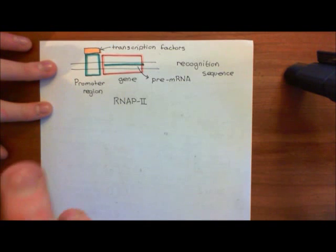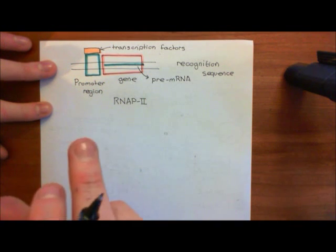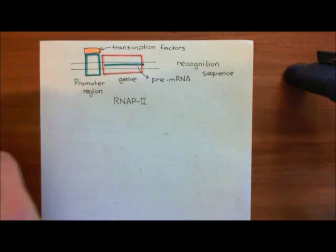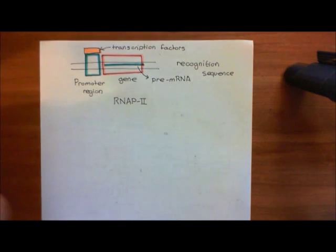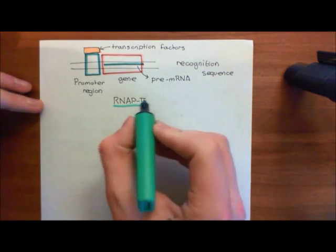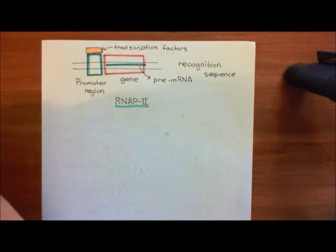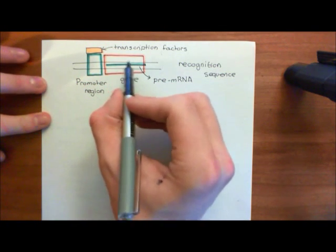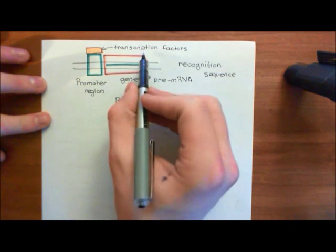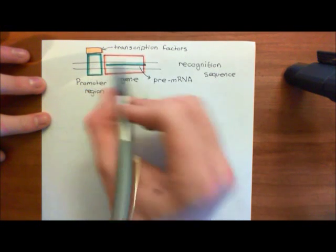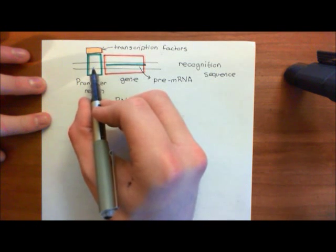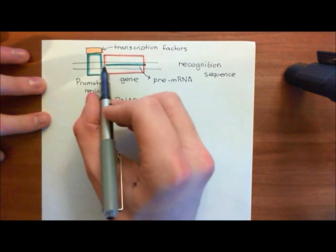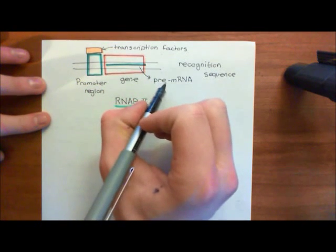At some of those promoter regions, they will increase the affinity of that promoter region for binding to RNA polymerase 2. Therefore, RNA polymerase 2 will bind to that promoter region more often. You'll get more mRNA being produced for the downstream gene, and therefore you'll get more proteins. The transcription factor binding to the recognition sequence within that promoter region has actually increased the expression of the downstream gene in that case.